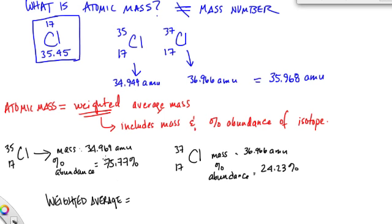We take the percent right here, and we turn it into a decimal. So 75.77% as a decimal is 0.7577. We take the percent, and we multiply it by its corresponding mass, 34.969.